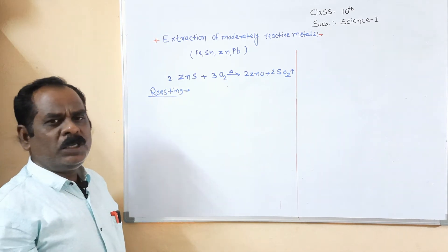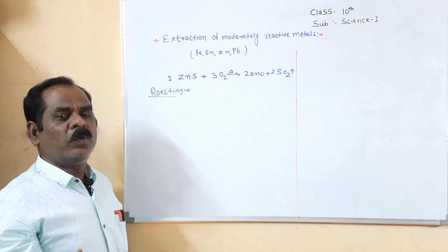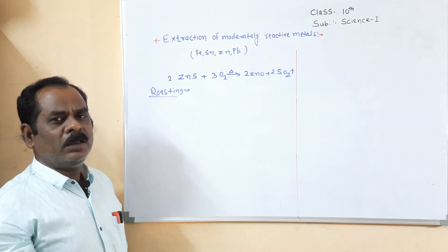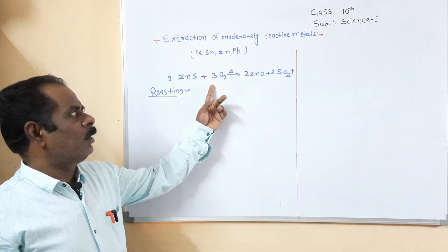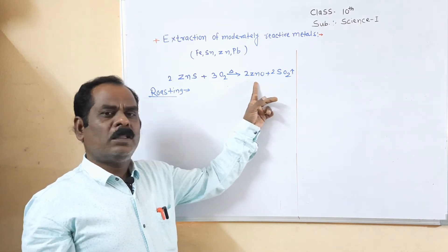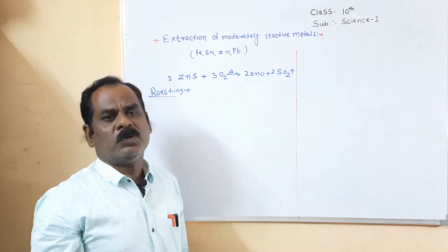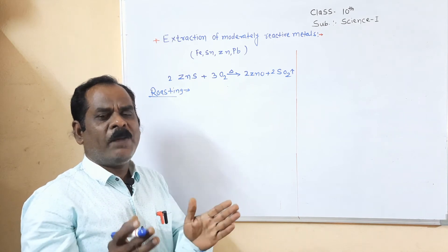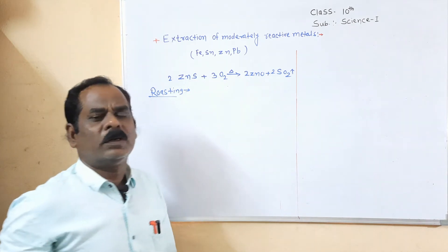How do you define roasting? When a sulfide ore is strongly heated in excess of air and converted into its oxide, the process is called the roasting process. In this process, the sulfide ore is converted into an oxide ore.